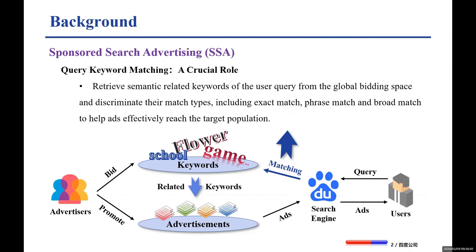Query keyword matching plays a crucial role in SSA by retrieving semantically related keywords of the user query from the global bidding space and discriminating their match types, including exact match, phrase match, and broad match, to help ads effectively reach the target population.